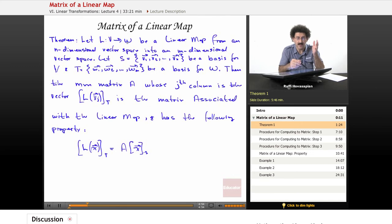So let me read through this and talk a little bit about what it means. So L is a linear map from a finite dimensional vector space to another finite dimensional vector space. The dimensions don't necessarily have to be the same. It's a linear map. S is a basis for V, the departure space. T is a basis for the arrival space.